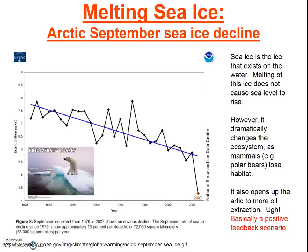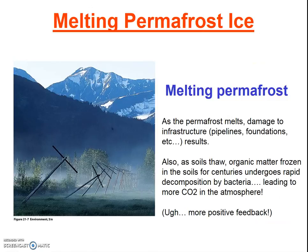Non-glacial ice is melting as well, such as the Arctic sea ice. This melting does not cause ocean levels to rise, but it does impact ecosystems. Additionally, it opens the Arctic up to more oil extraction. Another type of ice that is melting is permafrost — frozen water and soil that exists several inches or feet below the subsurface in Alaska, Canada, and other Arctic land areas. This melting may destroy pipelines and other infrastructure, and importantly, it will also thaw lots of organic material that will undergo rapid decomposition, sending huge amounts of carbon dioxide into the atmosphere.